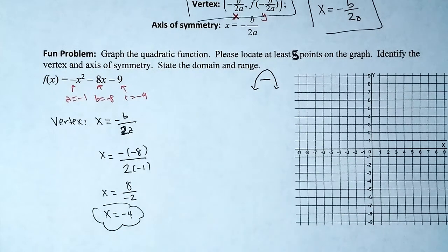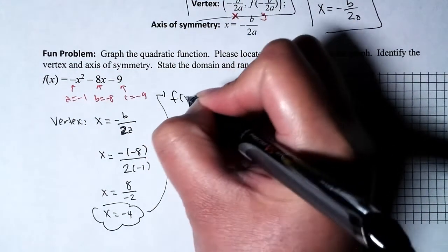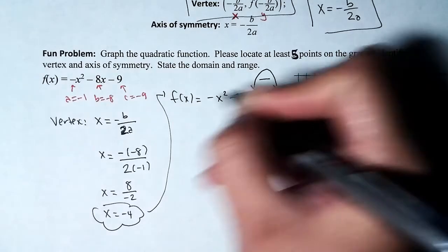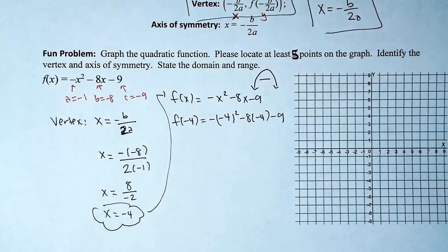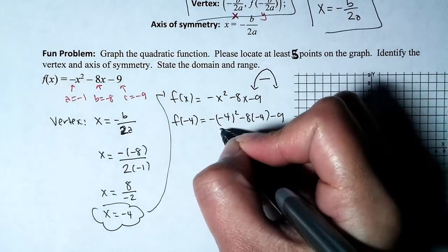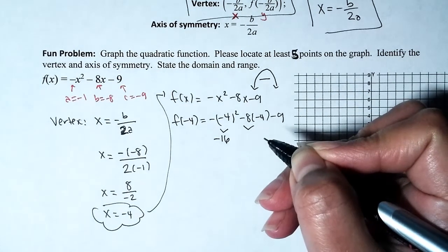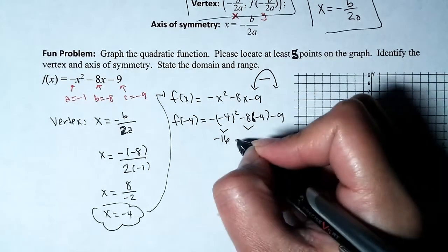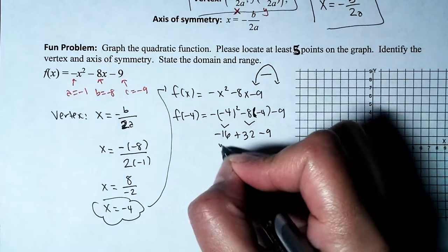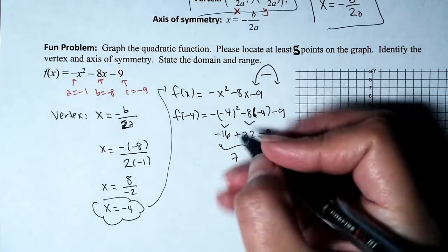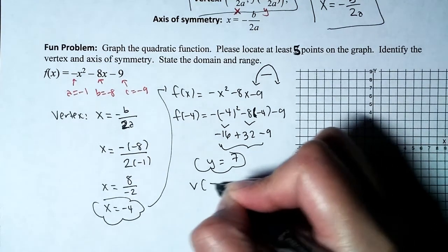We've found the x-coordinate of the vertex: negative 4. Now we need the y-value, so we evaluate the function at negative 4. Substituting x = negative 4: negative times the square of negative 4 is negative 16; negative 8 times negative 4 is 32; minus 9. Using a calculator, that gives us 7. So y equals 7, and the vertex is at negative 4, 7.